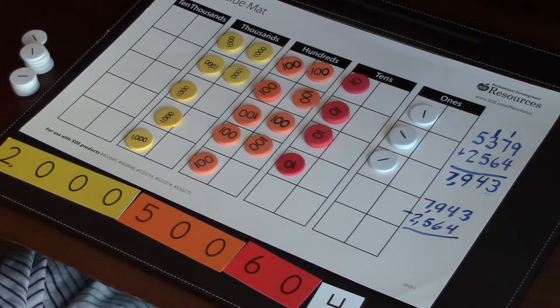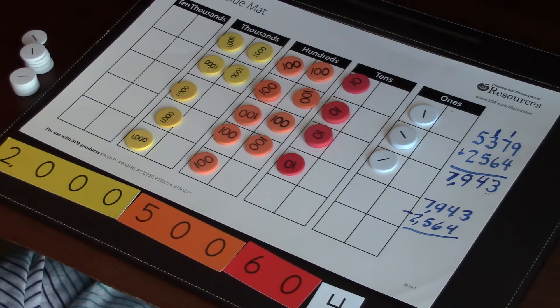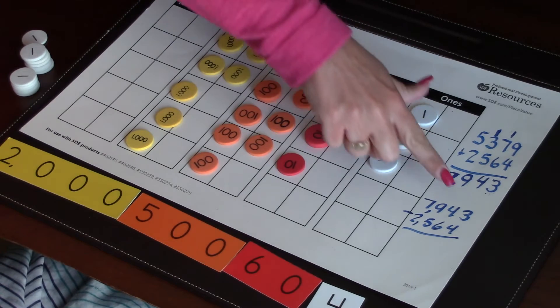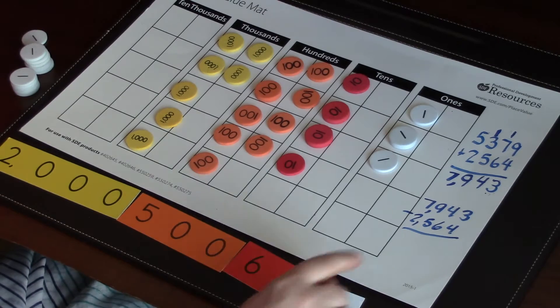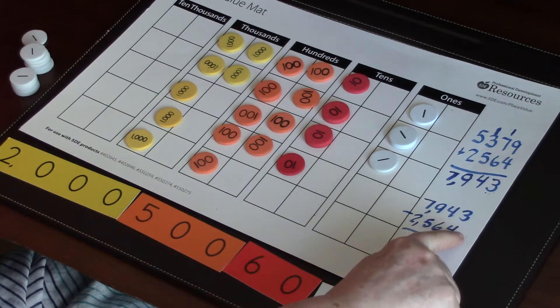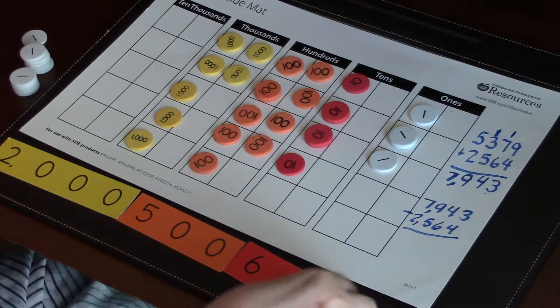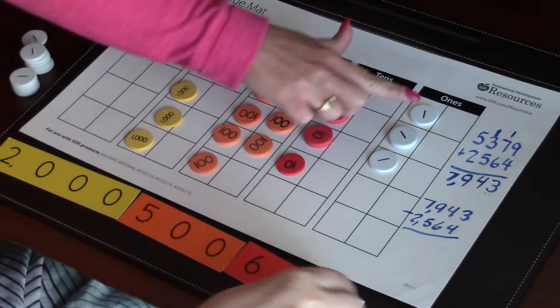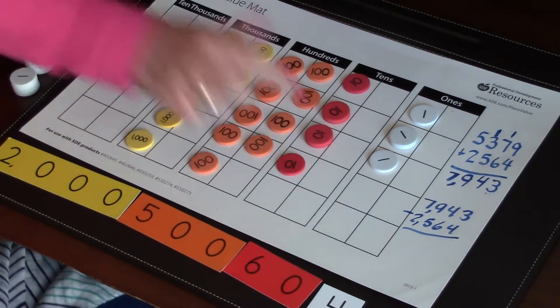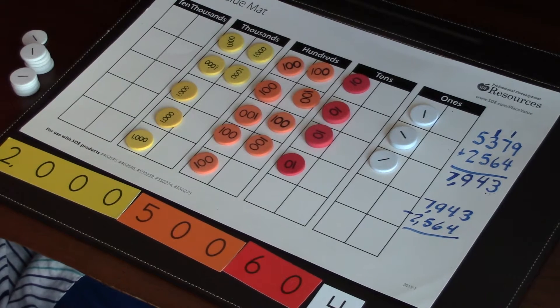So now when we're using the standard algorithm to subtract, where do we begin subtracting? We begin in our ones place. So in our ones place when we look at the problem, we have how many ones? Three ones and I need to take away four ones. Can I physically pick up four ones and put it on top of that value four? No.